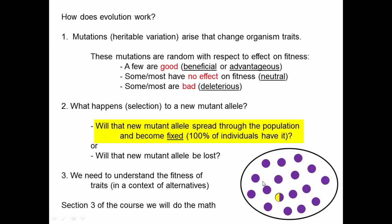It's spreading in terms of individuals mating with each other, and in the next generation copies of that allele are represented in the future population. So over time, does that allele become more and more common in the future population to the point at which it becomes fixed? Or will that new mutant allele be lost?